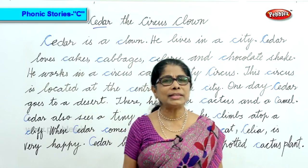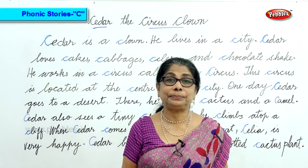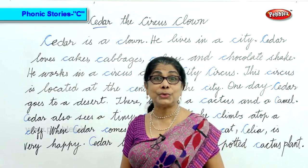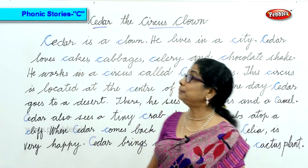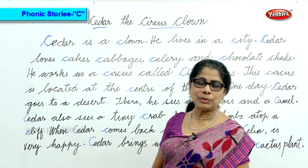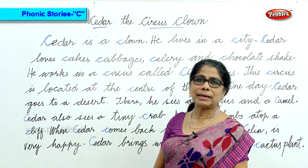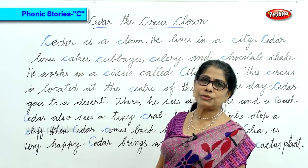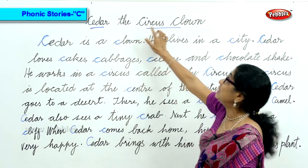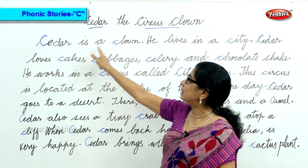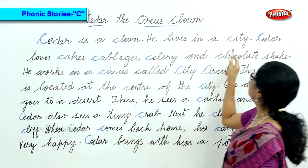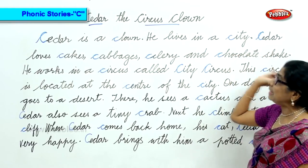Now we are doing the sound K and we are going to do a beautiful, very interesting story with the sound K. The story is called Cedar the Circus Clown. Let's look at all the K sounds that come in this very short, interesting story.